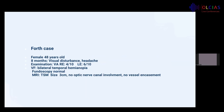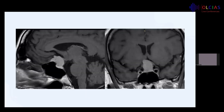The fourth case is a 48-year-old female complaining for eight months of visual disturbance and headache. On examination, visual acuity was 4/10 in the right eye and 6/10 in the left eye. Visual field showed bilateral temporal hemianopia and fundoscopy was normal. MRI showed a tuberculum sellae meningioma, 3 cm, without optic canal involvement and no vessel encasement, shown on sagittal and coronal views with contrast.